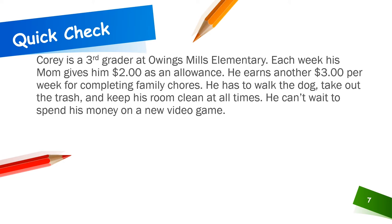Corey is a third grader at Owings Mills Elementary. Each week his mom gives him two dollars as an allowance — let's highlight that: two dollars as an allowance. He earns another three dollars per week for completing family chores, so let's highlight three dollars a week for family chores. He has to walk the dog, take out the trash, and keep his room clean at all times. And the last line says he can't wait to spend his money on a new video game. So I see that word spend — spend his money and he wants a new video game.